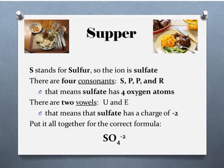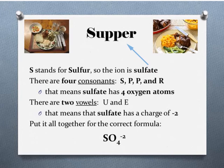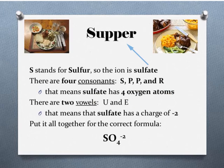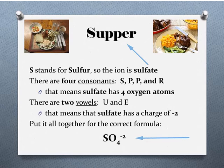The next word in our saying is supper. The S stands for the element sulfur, so our ion is the sulfate. There are four consonants — S, P, P, and R — which means the sulfate ion has four oxygens. There are two vowels, the U and the E, which means the sulfate ion has a charge of negative two. Our formula is SO4²⁻.